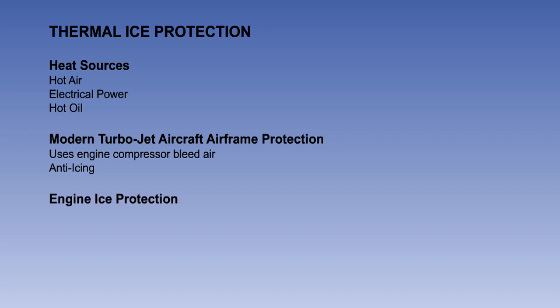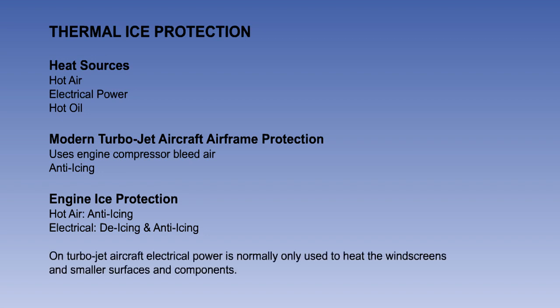You also now know that the engine intake can be heated using either hot air or electrical power. If hot air is used the system will be an anti-icing system. But if electrical power is used there will usually be a combination of de-icing and anti-icing. Finally you should know that on turbojet aircraft electrical power is normally only used to heat the windscreens and smaller surfaces and components.